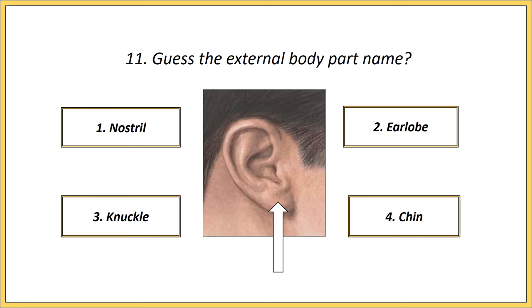Eleventh one. Guess the external body part name. Options: nostril, earlobe, knuckle, chin. Answer is earlobe.